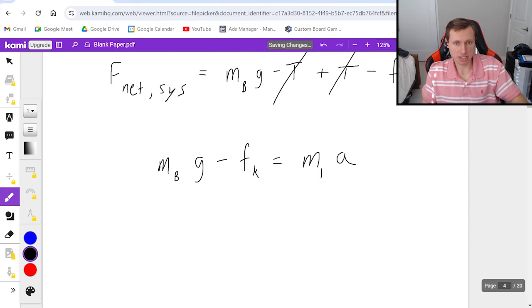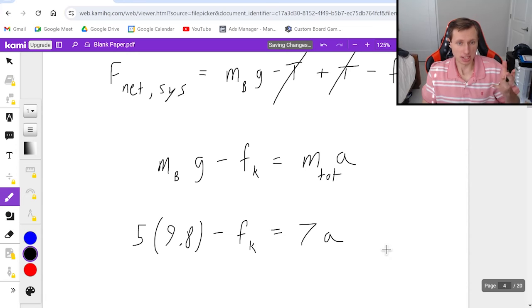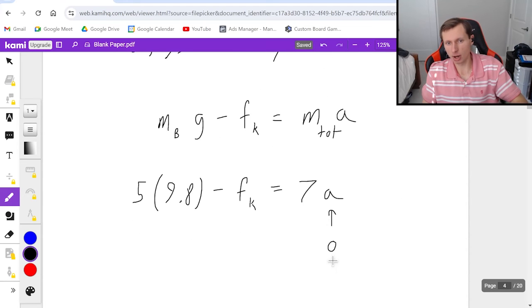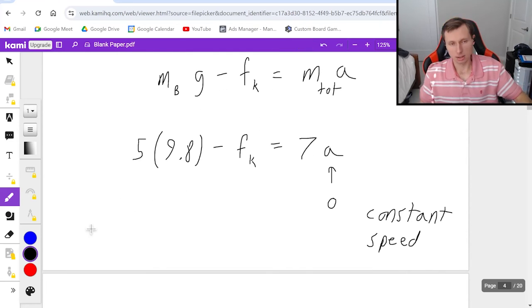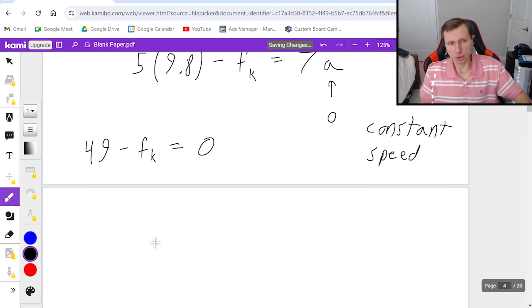So I'm just left with m_B*g minus friction force f_k is equal to mass times acceleration. And remember, since we're talking about the system, this is the total mass. So mass B was five kilograms times 9.8. We don't know f_k, and that's fine, we'll find it, equals mass, the total mass, five plus two, seven times acceleration. Do we know that acceleration? Yes, we do. The acceleration is going to be zero. How do I know that? It was constant speed. Constant speed means the acceleration is zero. So then what that means is five times 9.8 is 49 minus f_k is equal to just zero. So it looks like f_k, my frictional force, is equal to 49 newtons.